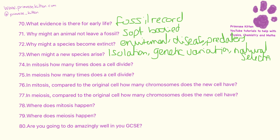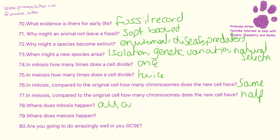In mitosis a cell is going to divide once. In meiosis it is going to divide twice. In mitosis, compared to the original cell, the new cell is going to have the same number of chromosomes, and in meiosis it is going to have half the number of chromosomes. Mitosis happens all over the body, whereas meiosis only happens in the testes or ovaries.